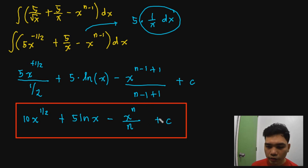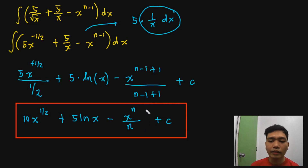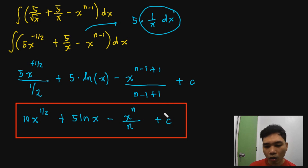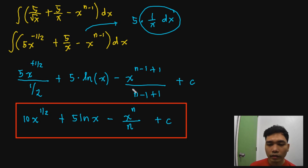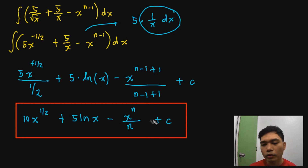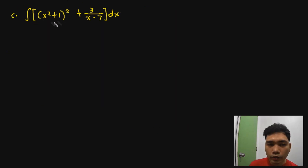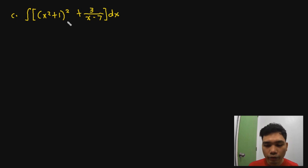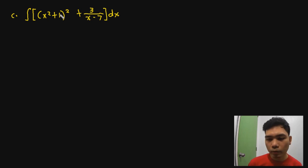Your answer should always have the constant of integration. Remember, without it, you're just talking about a single antiderivative, not the indefinite integral, which covers all possible answers. C can assume any real value — 1, 2, 3, negative 5, negative 7, and so on. Now for the next problem, since it doesn't have a fitting integrand by just looking at the expression, we need to rewrite it by expanding x squared plus 1 squared, leaving the last term as is. This gives x to the fourth plus 2x squared plus 1, plus 3 over x minus 7.